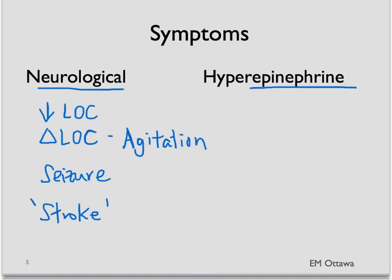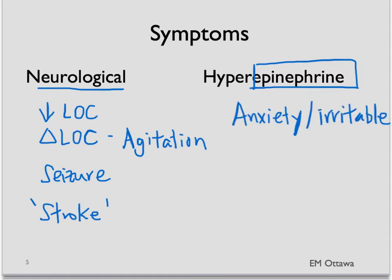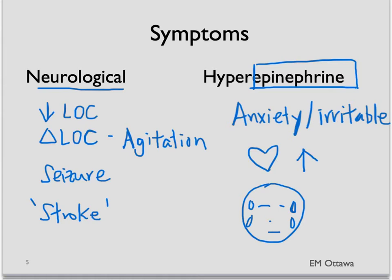With the fall in blood sugar, the body releases catecholamines. Epinephrine is one of these catecholamines, and this causes the following symptoms: anxiety, irritability, palpitations, and diaphoresis. In our patient, the presentation of decreased level of consciousness and the low blood sugar certainly seems to fit with hypoglycemia.